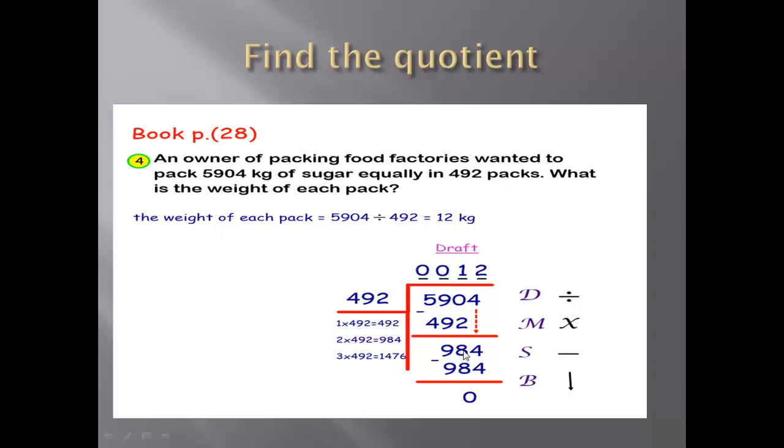Bring down the digit number, it will be 984. Subtract equals 0. This is the same steps for divisions. Remember: divide, multiply, subtract, and bring it down. Then the quotient equals 12. The quotient is 12.